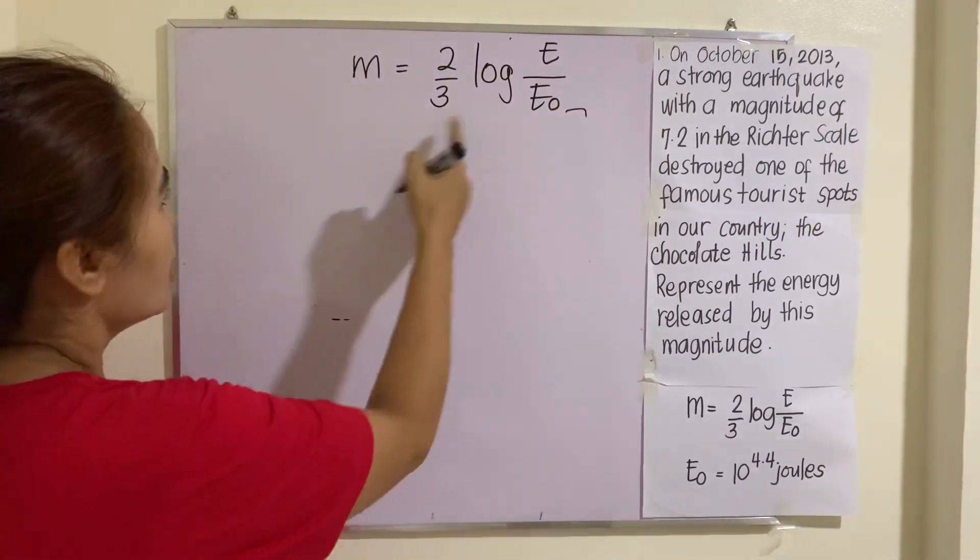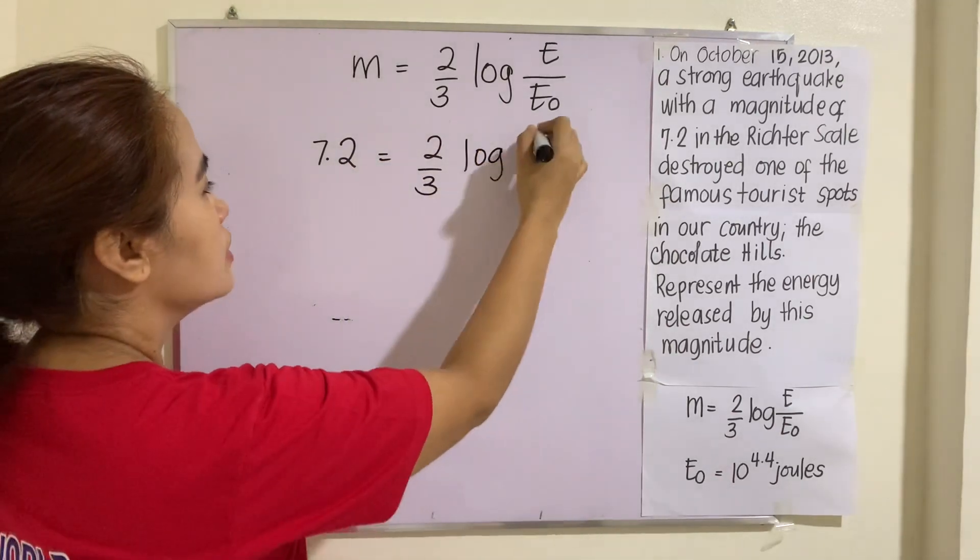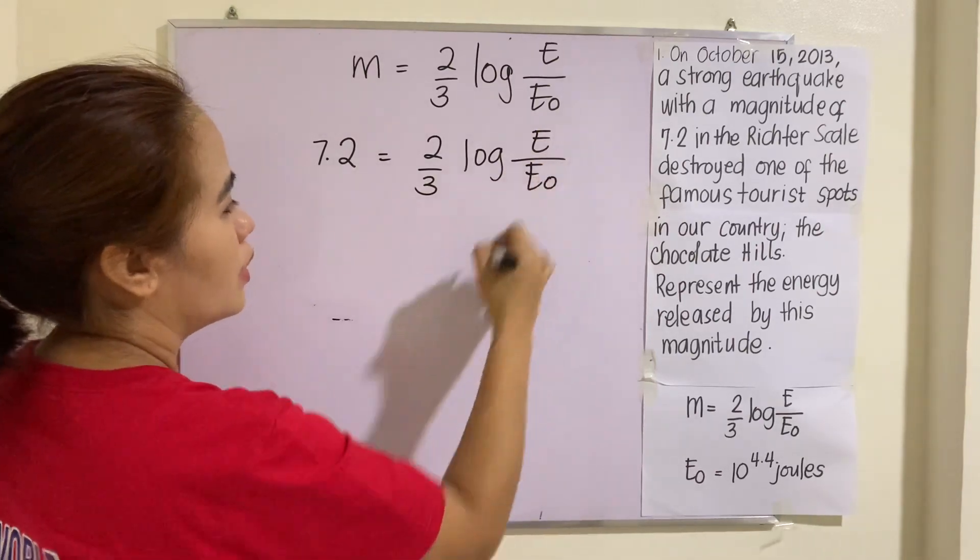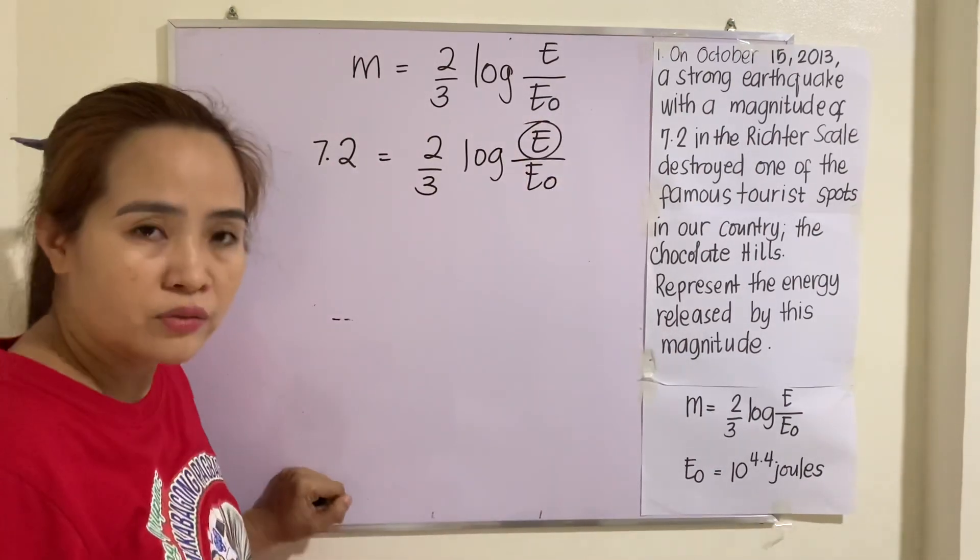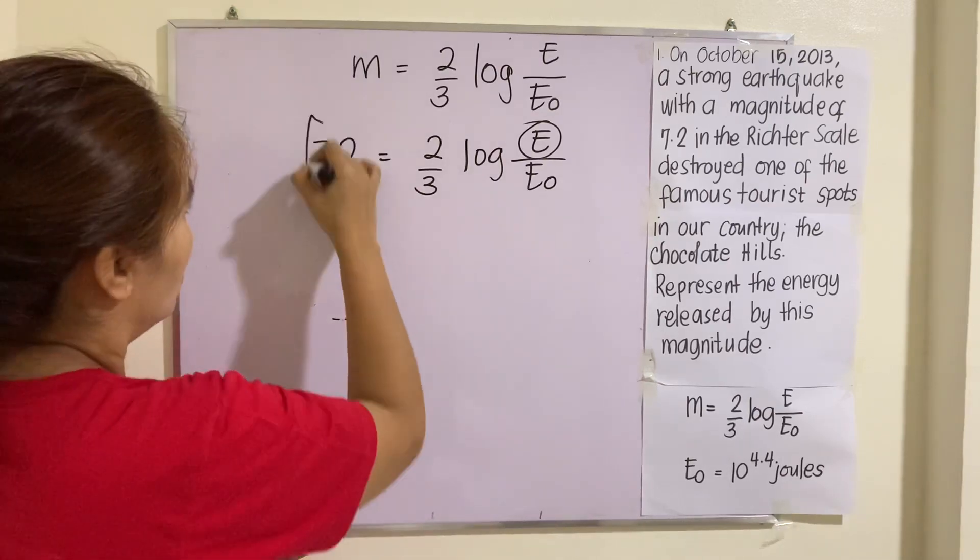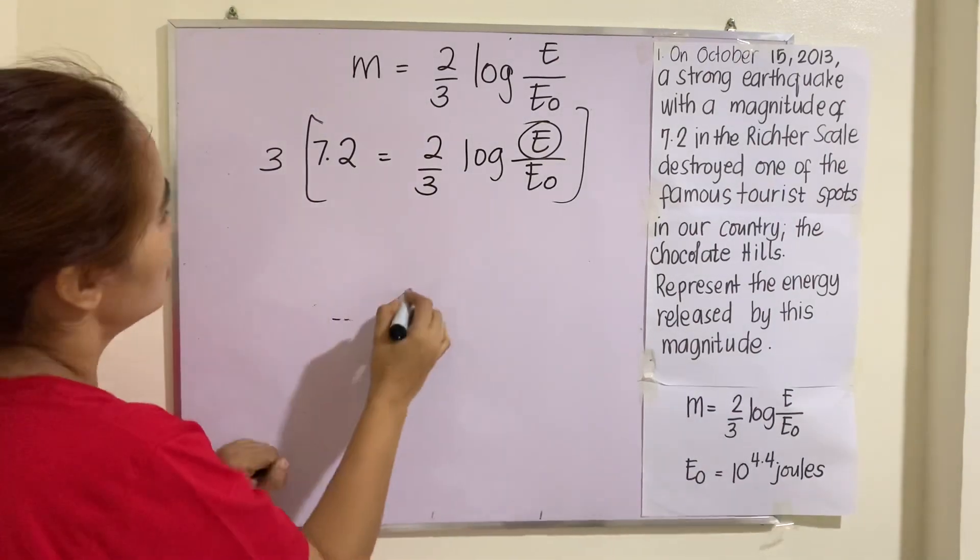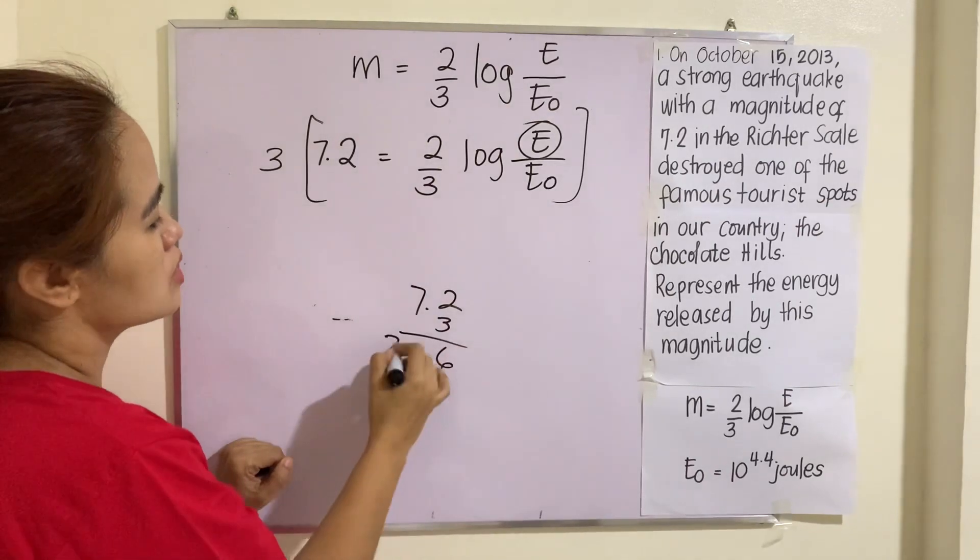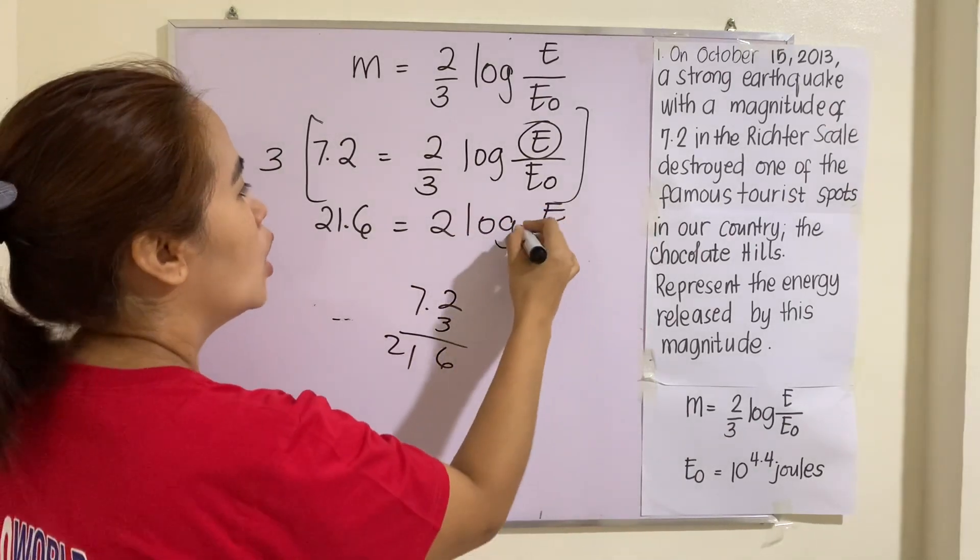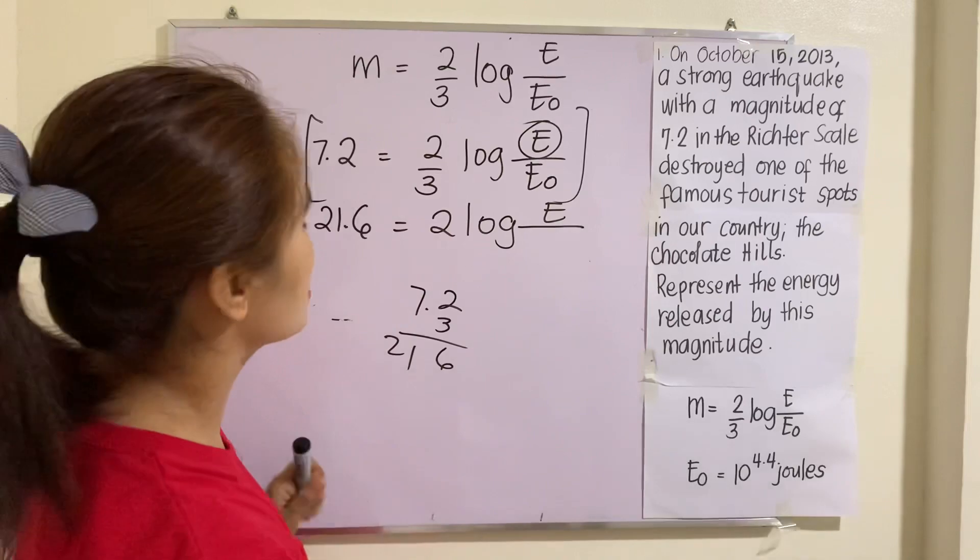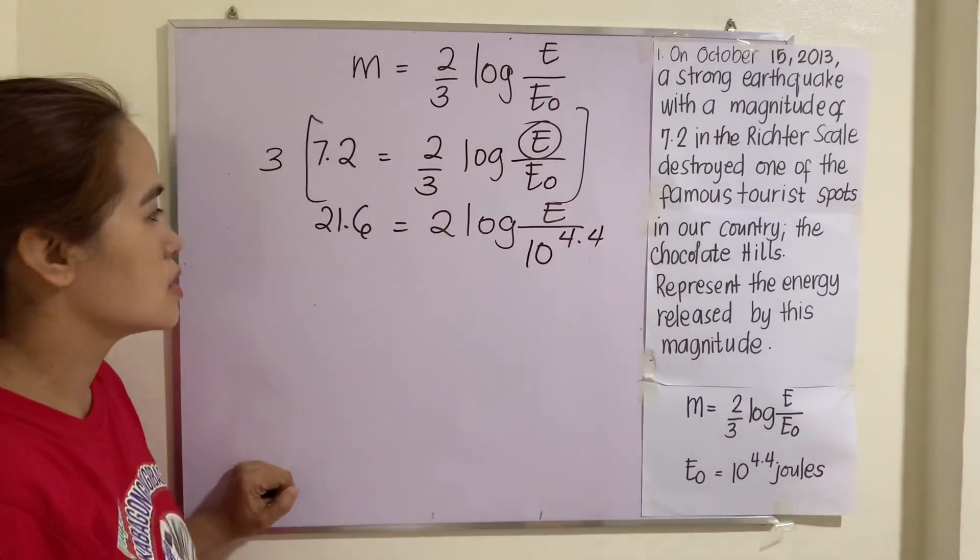Let's do it. M is given. That will be 7.2 = (2/3)log(E/E_0). Take note that we will just be representing the energy released by this magnitude. We will not solve. We will just be representing it. So we will multiply first both by 3 to remove this one. So 3 times 7.2, 7.2 times 3, that will be 21.6. 2 log of E over E_0 is given. And that is 10^4.4 joules.